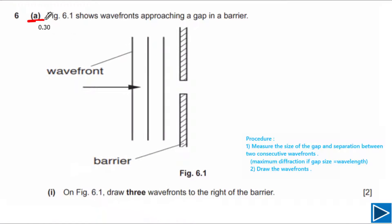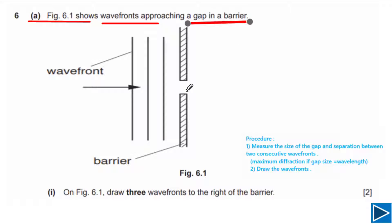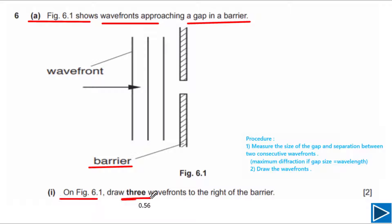For part A, it is given that wave fronts are approaching a gap in a barrier. This is the gap and this is the barrier. We need to draw at least three wave fronts to the right of the barrier — on this side we need to draw.